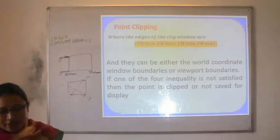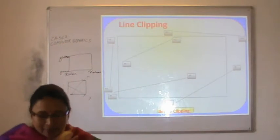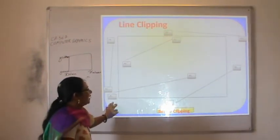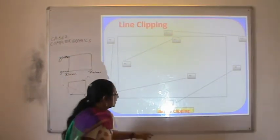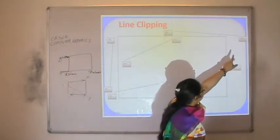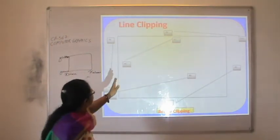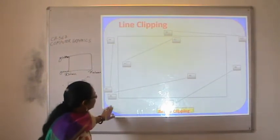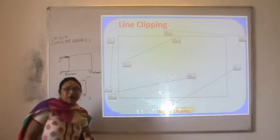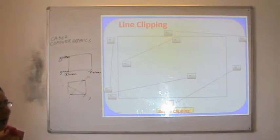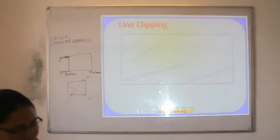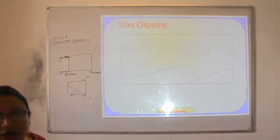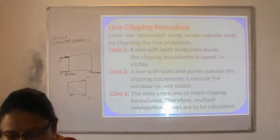If one of the four inequalities is not satisfied, then the point is clipped and not saved for display. Next is line clipping. There are numbers of lines where some coordinates lie inside the clipping window and some are outside. For example, p7 is outside the window, p8 is also outside, p3 and p4 are outside. p1-p2 is completely inside the clipping window. For lines like p5-p6 and others, some part is inside and some part is outside. After clipping, we will see only the portion that lies inside the clipping window.